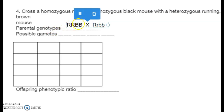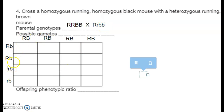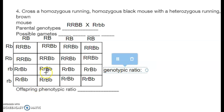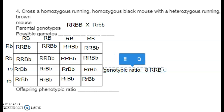The gametes for the homozygous parent are all big R big B. For the heterozygous parent: big R with little b, big R with little b, little r with little b, little r with little b. Filling in the boxes we get big R big R big B little b — and all those would be eight of our sixteen.